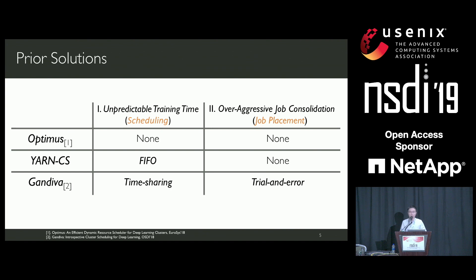Gandiva is the most recent scheduling framework for deep learning clusters. Jobs in Gandiva are scheduled in a time-sharing manner. However, time-sharing-based scheduling algorithms are designed for fairness instead of optimizing job completion time. In job placement, Gandiva runs multiple trials on a single job and picks the one with the best training performance. None of these three solutions can handle the two challenges very well.